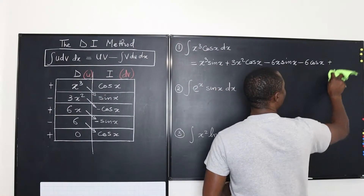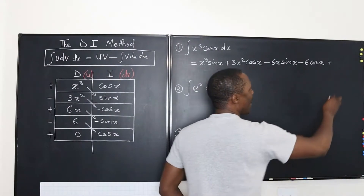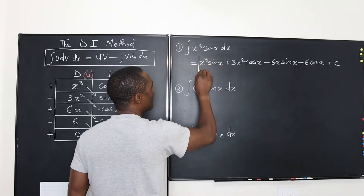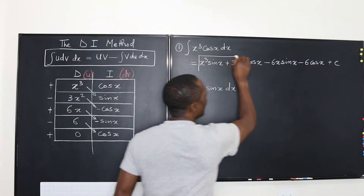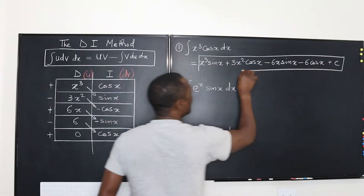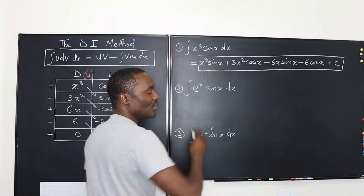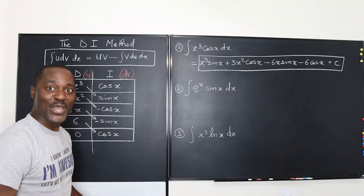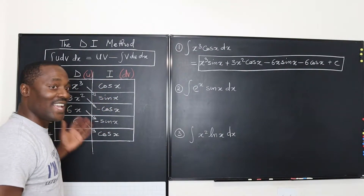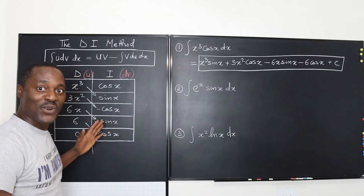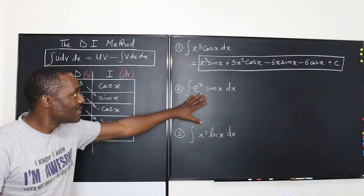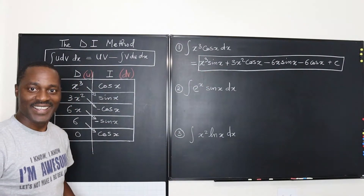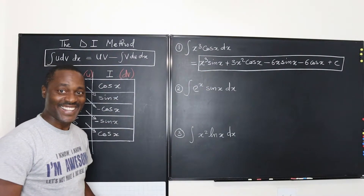So we write plus C, and that's our answer for the first one from the table. You see, you don't have to write many things — you just need to fill the table with the correct derivative or the correct integral, and then write out your answer. That's beautiful.